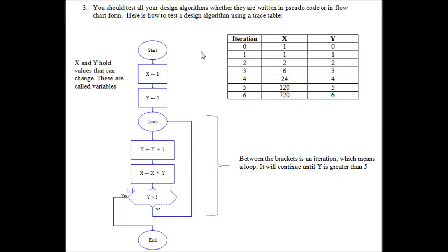Let's start off with iteration zero. This means that it's a sequence and is not in a loop. So X is given the value 1 and Y is given the value 0.